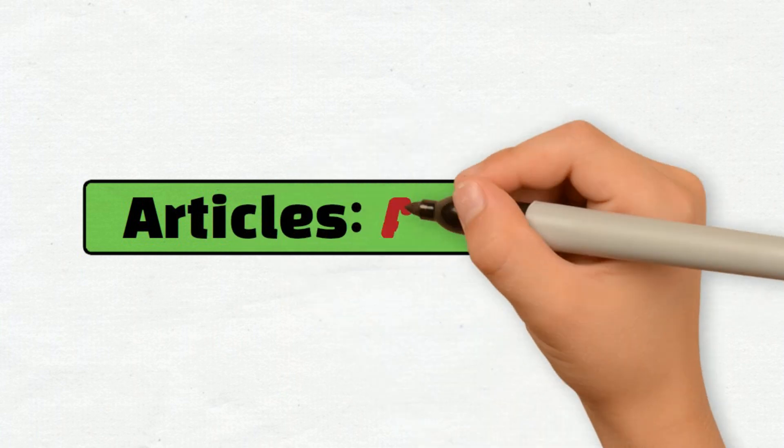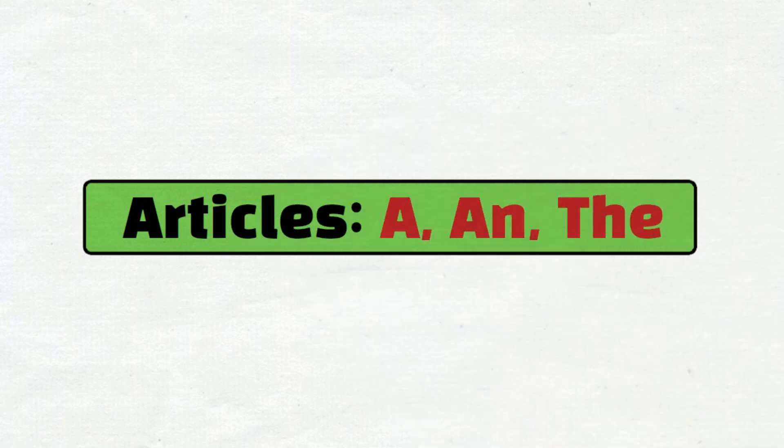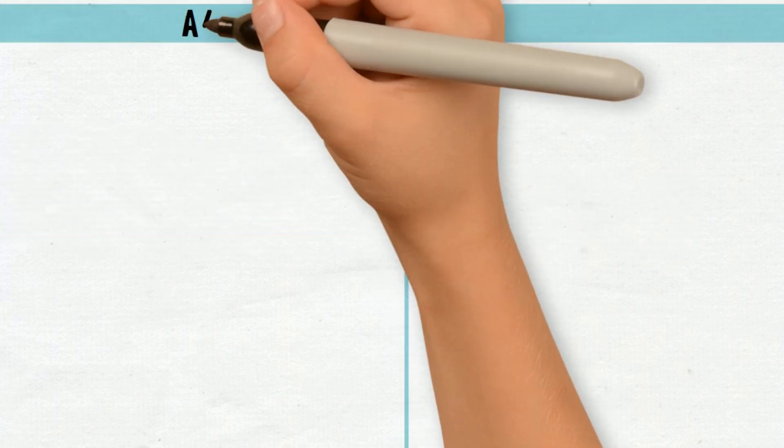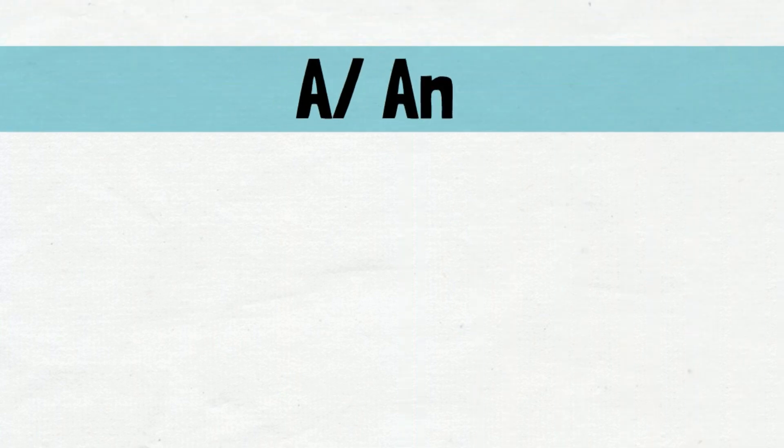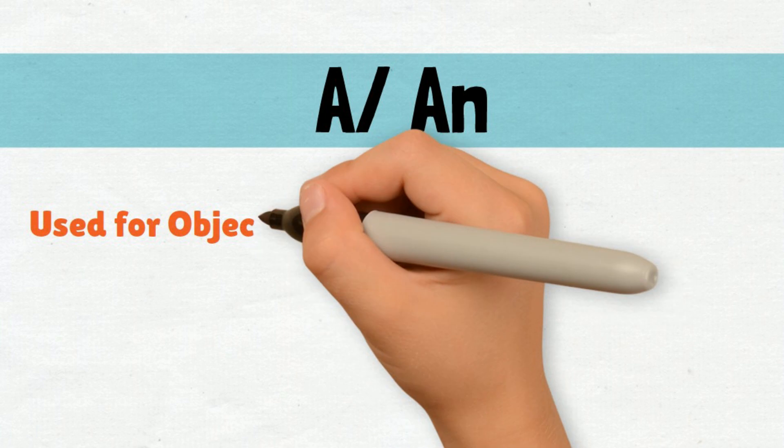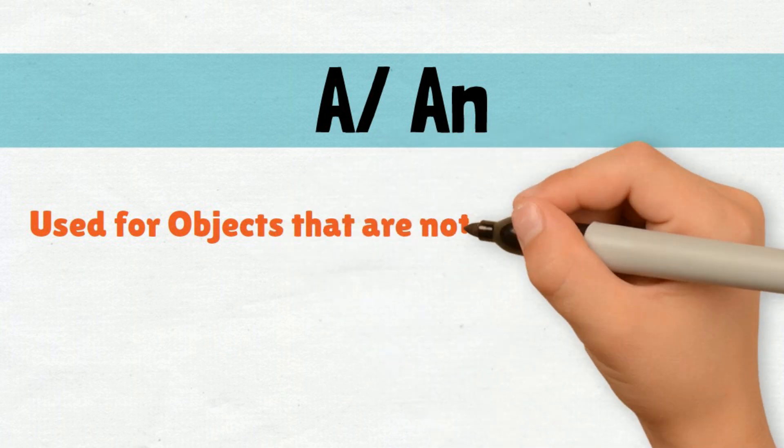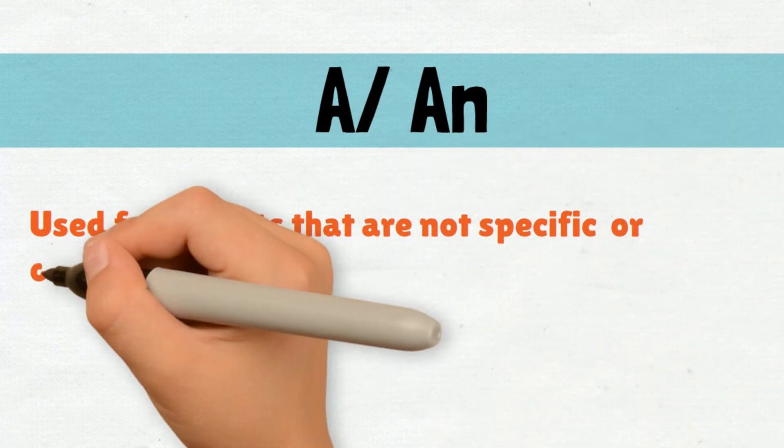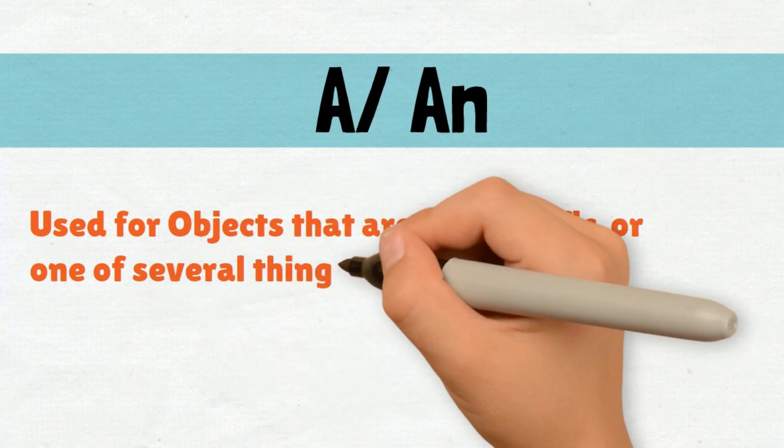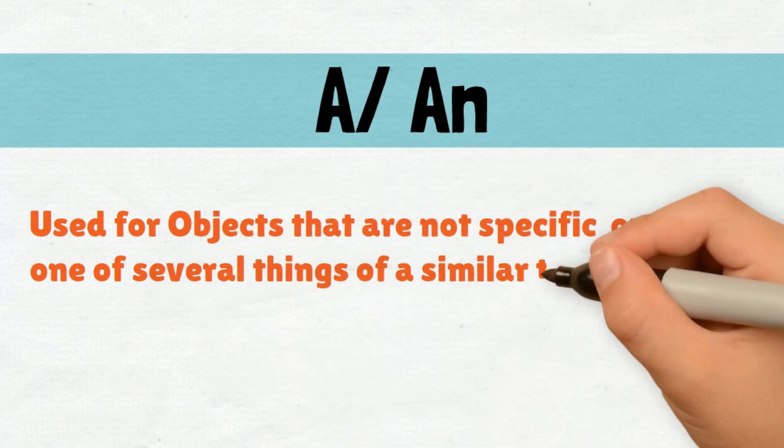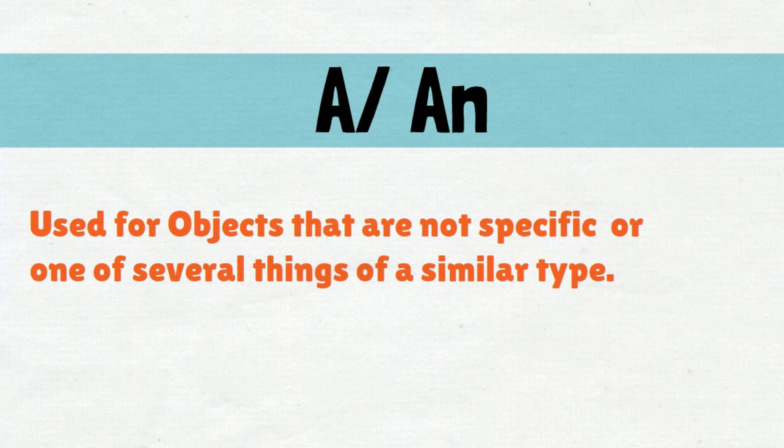Learn English articles A, An, and the. A and An are used for objects that are not specific, or one of several things of a similar type.